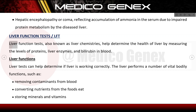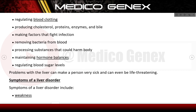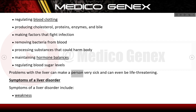Liver function tests, also known as liver chemistries, help determine the health of the liver by measuring levels of proteins, liver enzymes, and bilirubin in the blood. The liver performs vital bodily functions including removing contaminants from blood, converting nutrients from food, storing minerals and vitamins, regulating blood clotting, producing cholesterol, proteins, enzymes and bile, making factors that fight infection, processing harmful substances, maintaining hormone balance, and regulating blood sugar levels.